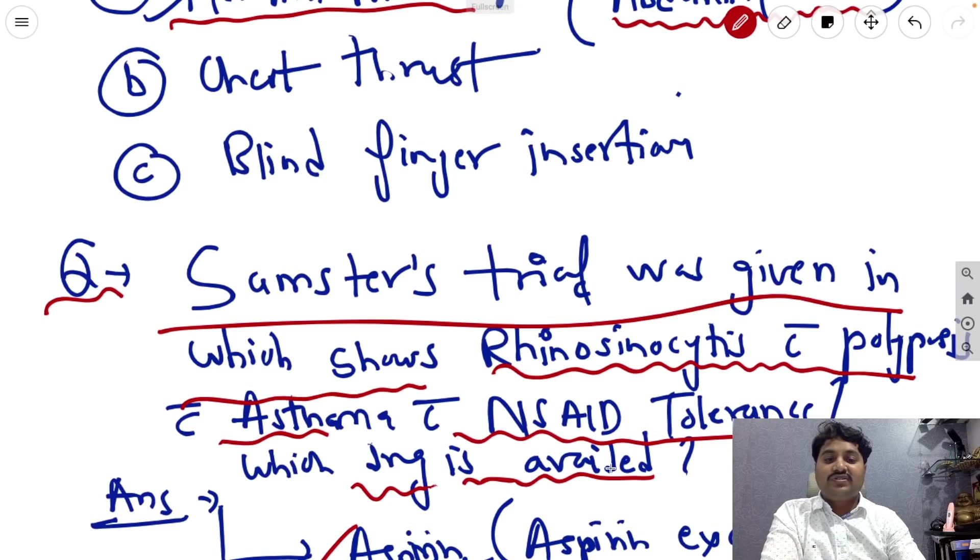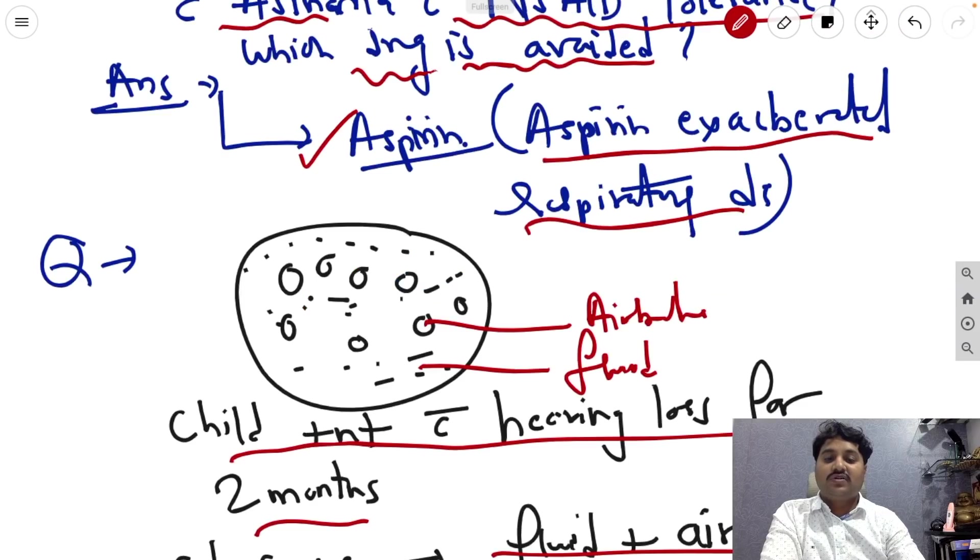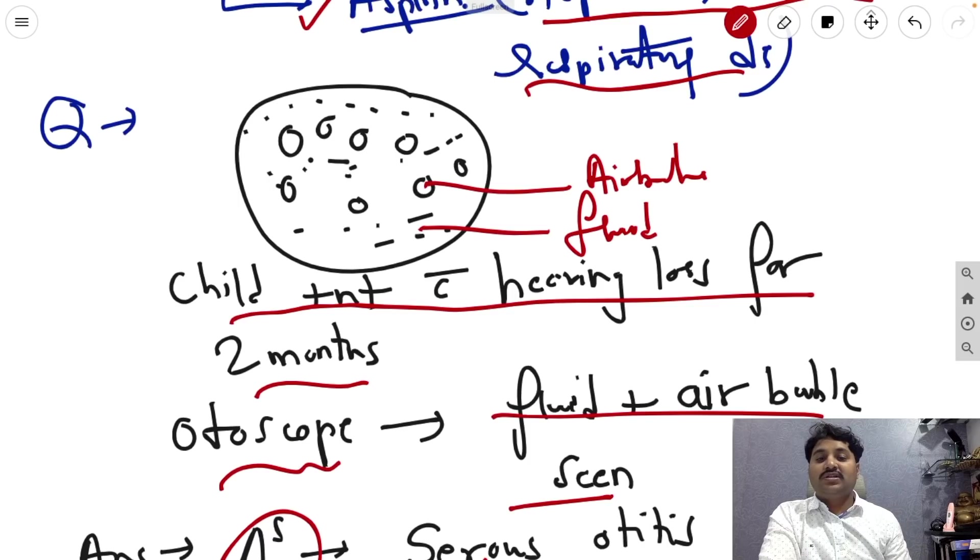Next question, Samsa triad was given showing rhinosinusitis with polyposis, with asthma, with NSAID intolerance. Which drug is avoided? Answer is aspirin, that is aspirin exacerbated respiratory disease. Next question shows the otoscopic finding in the child having ear loss for two months. Fluid and air bubble are clearly seen. Answer is serous otitis media.